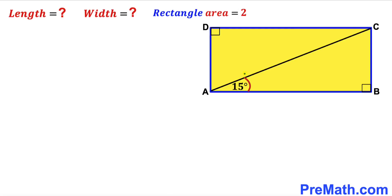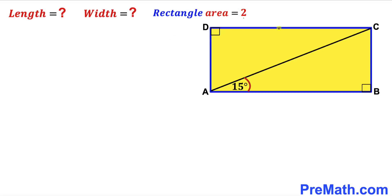Welcome to pre-math. In this video we have got rectangle ABCD along with diagonal AC such that angle BAC is 15 degrees, and the area of this rectangle has been given to us as 2 square units. Our task is to find the length and the width of this rectangle.